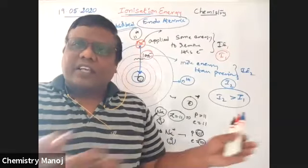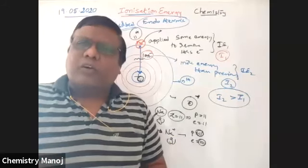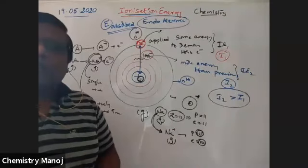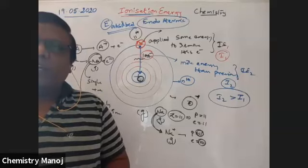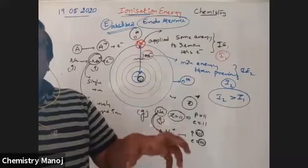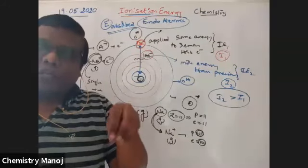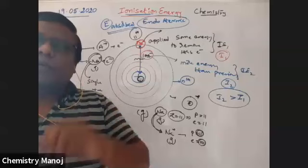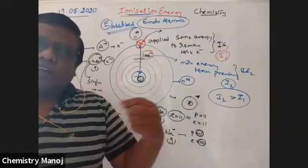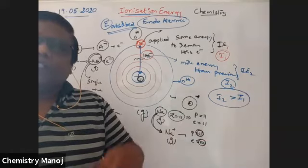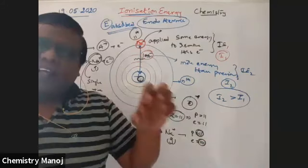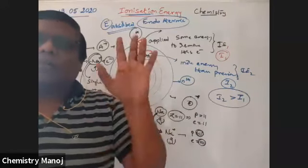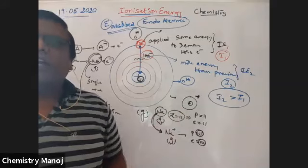How many ionization enthalpies are possible? As many as the number of electrons. For example, if there are 10 electrons, there are 10 ionization enthalpies; if there are 20 electrons, there are 20 ionization enthalpies. For any atom, the maximum number of ionization enthalpies is equal to its atomic number Z.